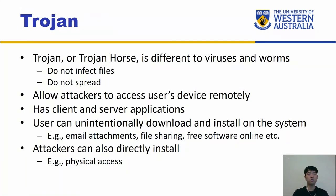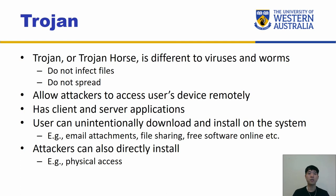Now for Trojans. A Trojan or Trojan horse is different to viruses and worms — they don't infect files and they do not spread. They literally just sit there waiting and allow attackers to access the user's device remotely, so it's kind of like a backdoor. Trojans also have client and server applications so the attacker can remotely connect and control what the Trojan should do. A user can unintentionally download and install it through email attachments, file sharing, free software online, and so forth — hence it's very important to check checksums.